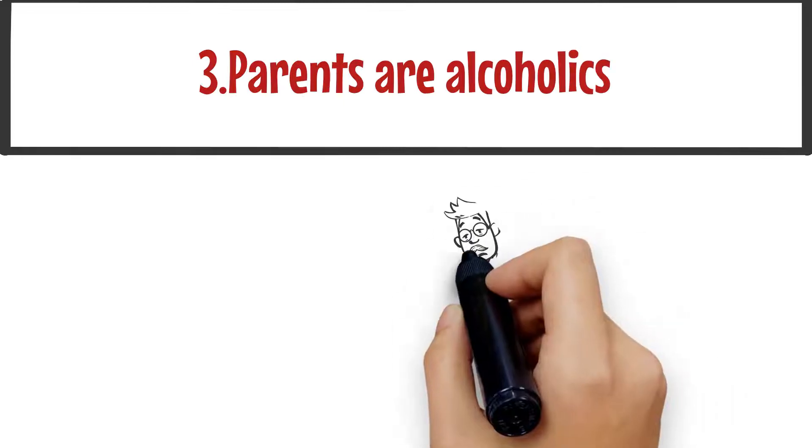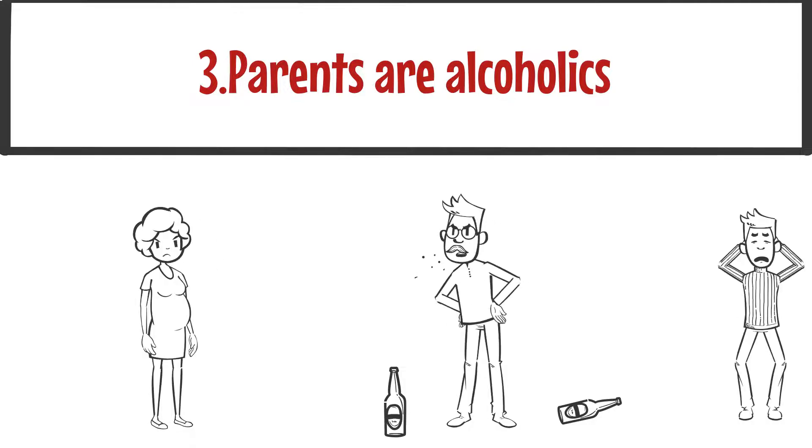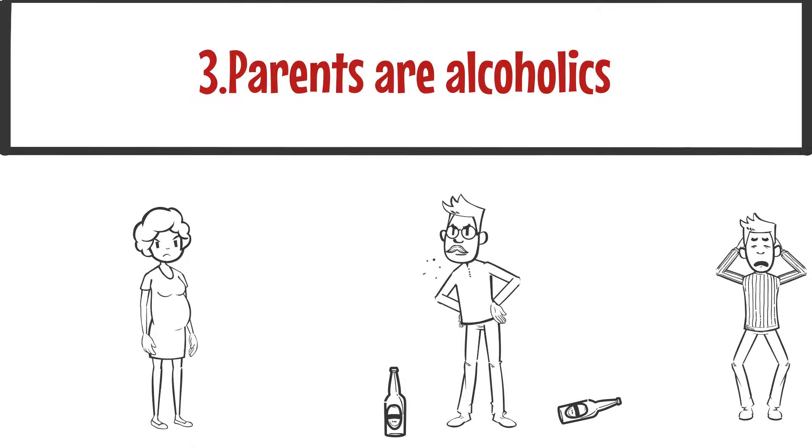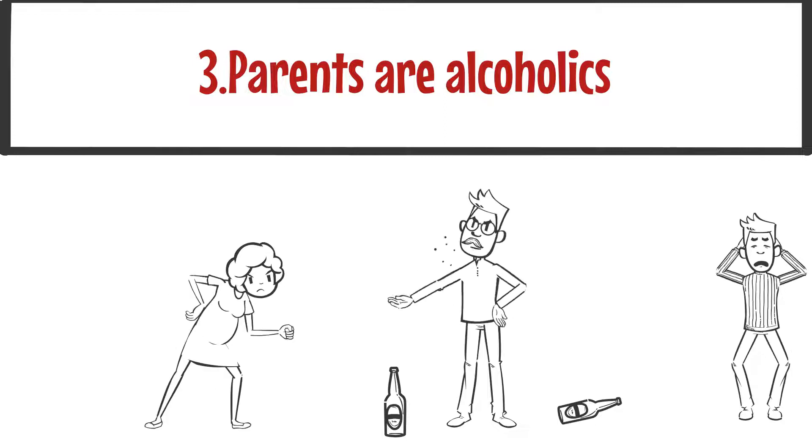Number three, parents are alcoholics. Having an alcoholic parent increases a person's chance of becoming addicted fourfold. It is said that half of the causes of alcoholism are genetic. Alcoholic families also have many fights between couples and the children may be exposed to violence. This can lead to emotional instability in the children, making them more likely to become alcoholics as adults.